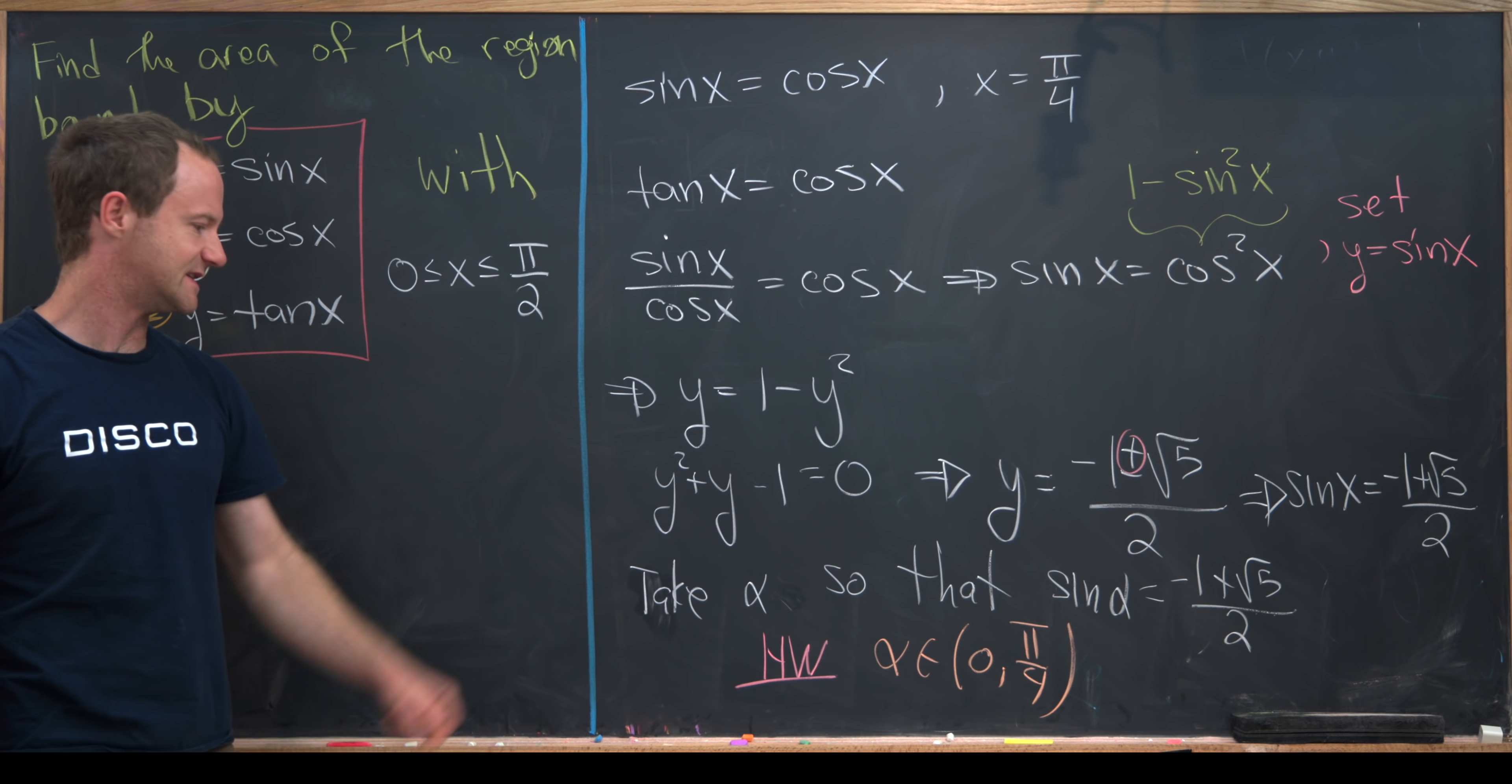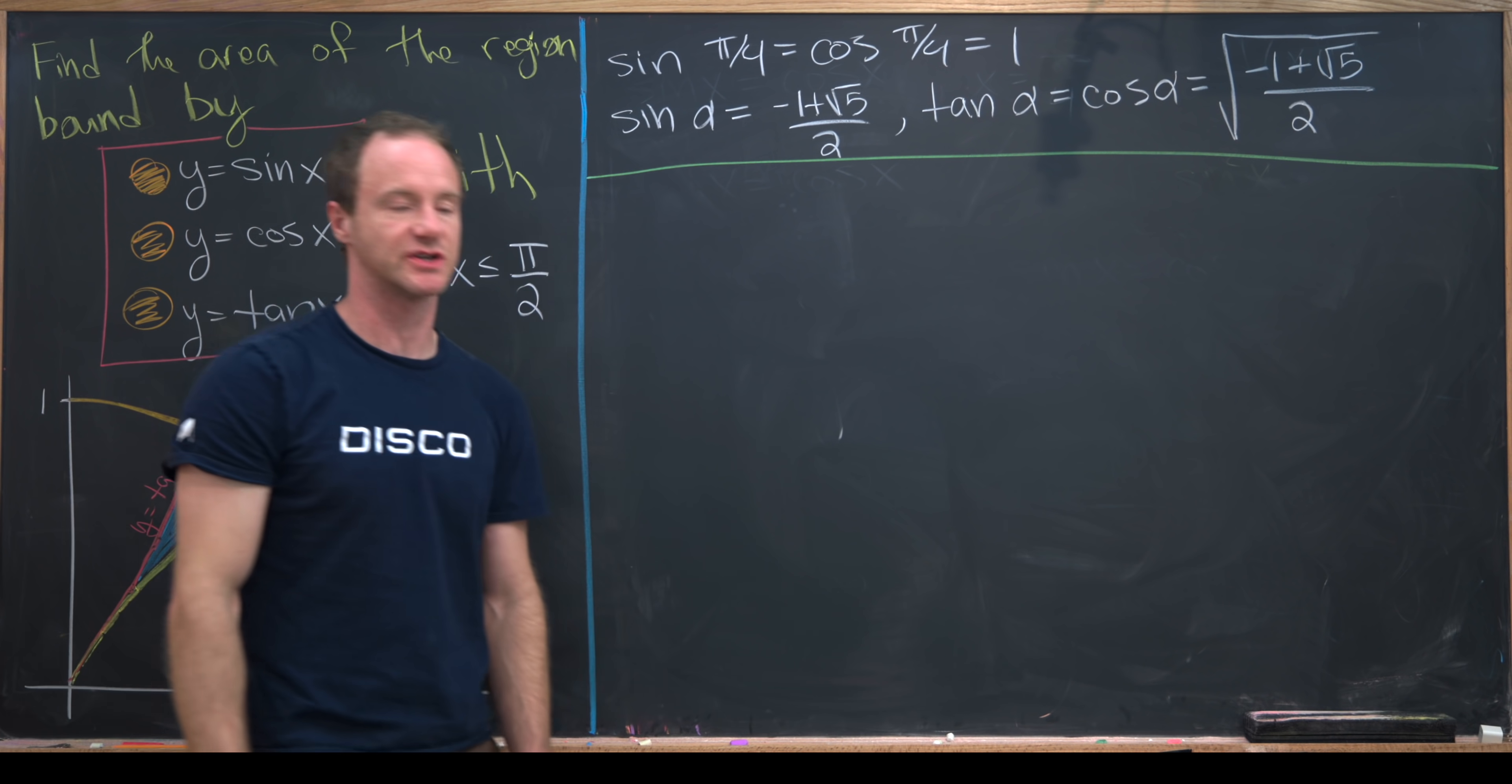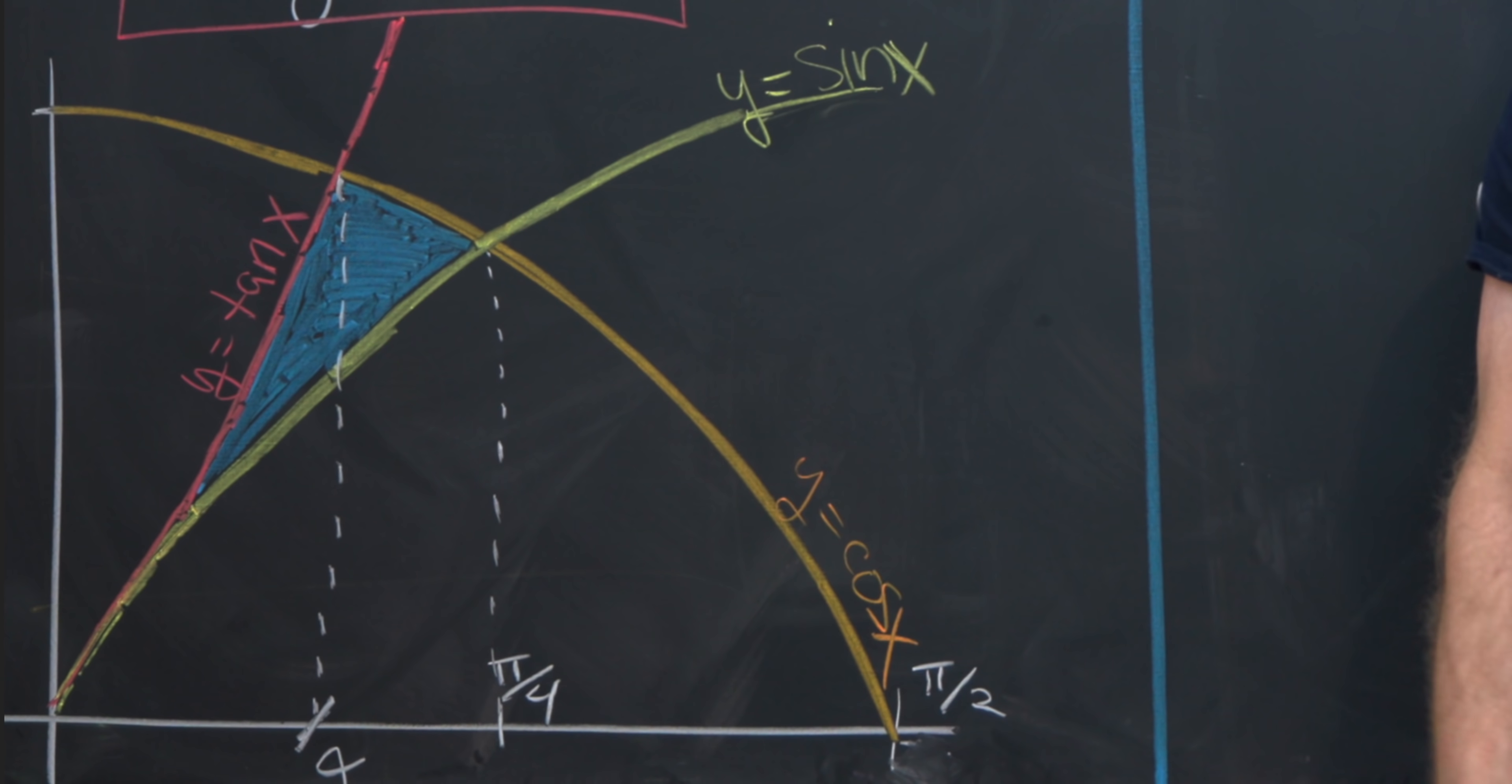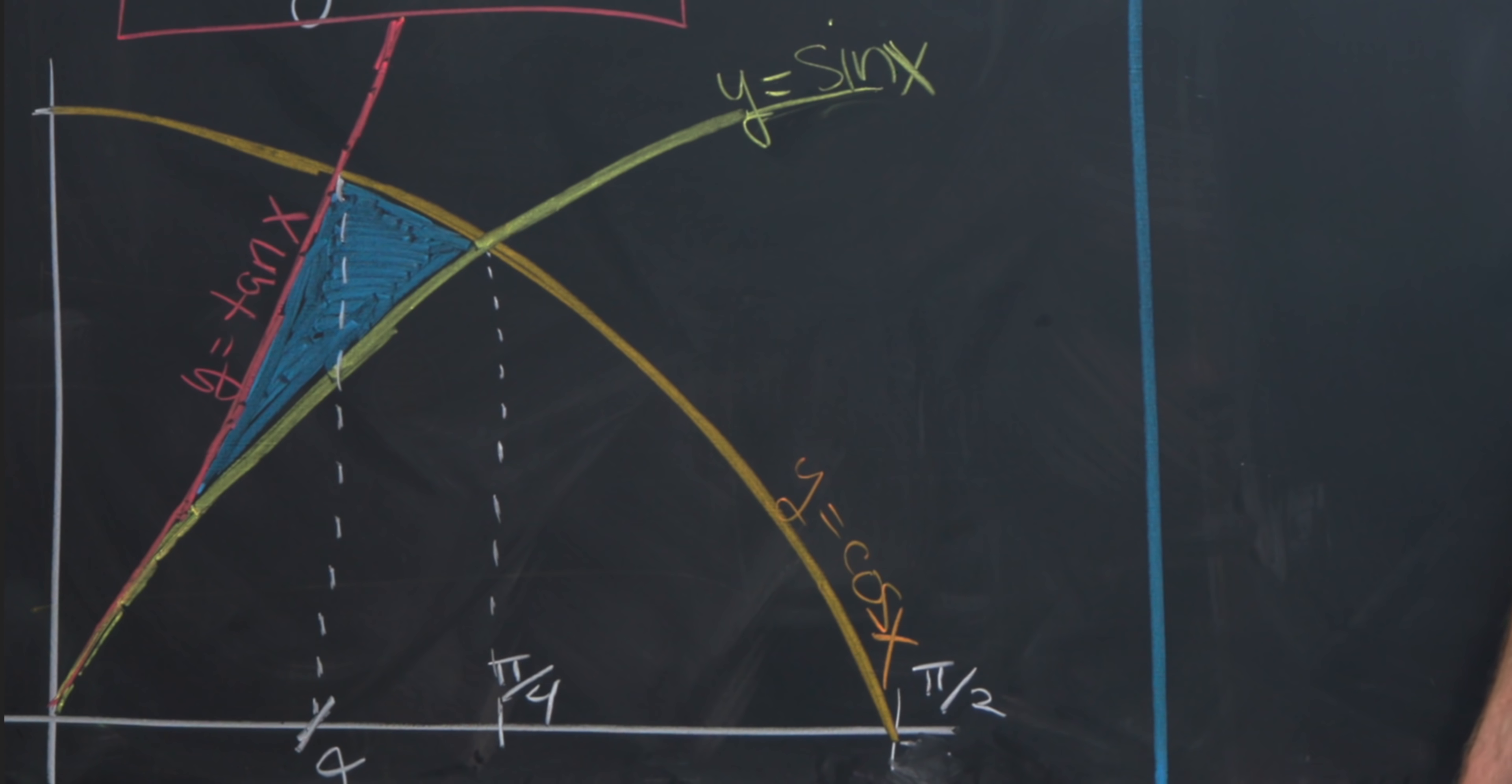So now using this data, we can make a nice picture of the situation. On the last board, we did some algebraic calculations that allowed us to draw the following picture. In red here, we have the tangent function, going out of frame because it has a vertical asymptote at pi over 2. Then in yellow, we have the sine function, and in orange, we have the cosine function.